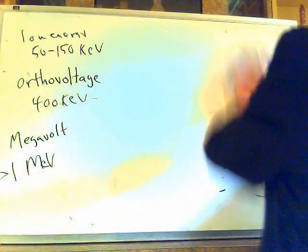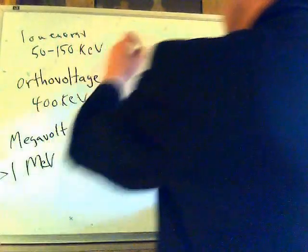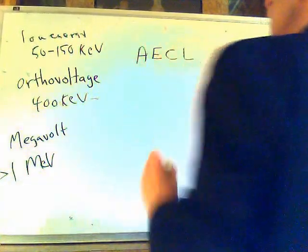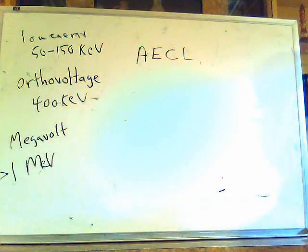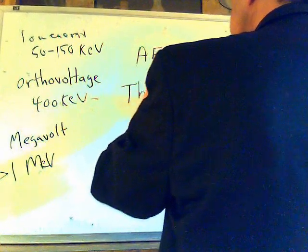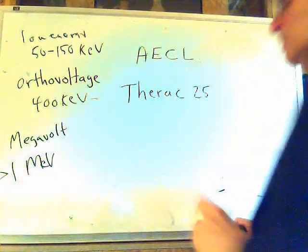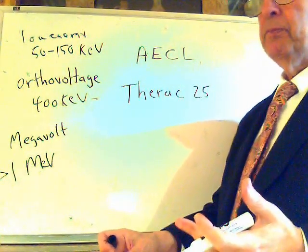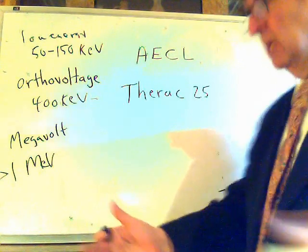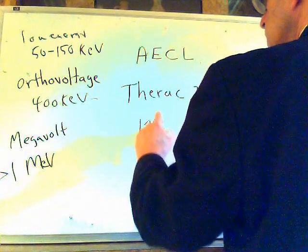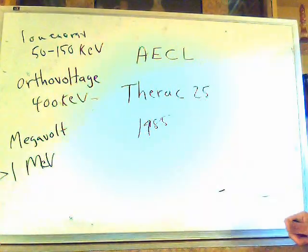A device produced by a Canadian company called AECL — the Atomic Energy Company Limited — called the Therac-25 was used extensively in the United States. It was a combined electron beam and x-ray device. Around 1985 they started to have serious problems with this device.